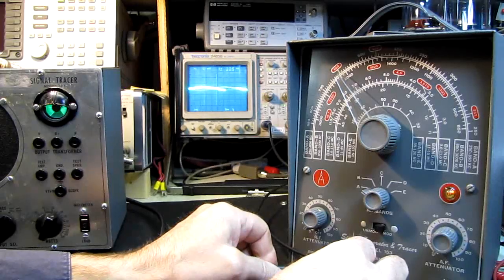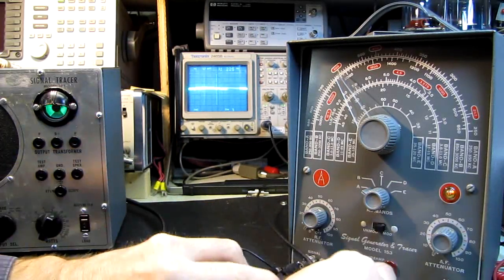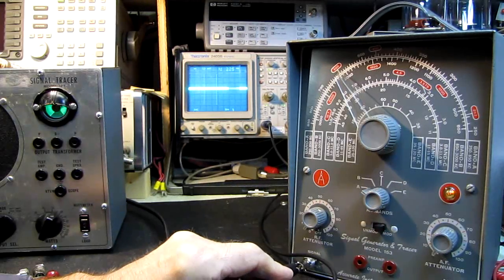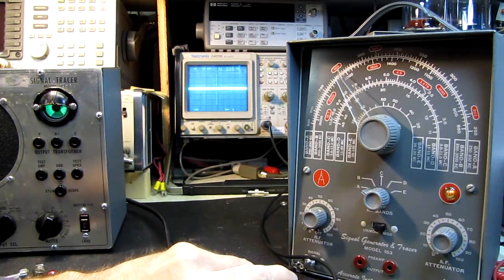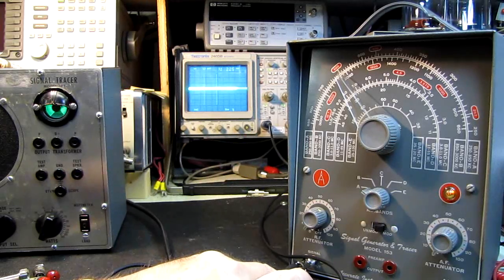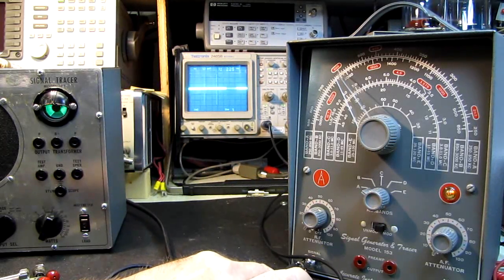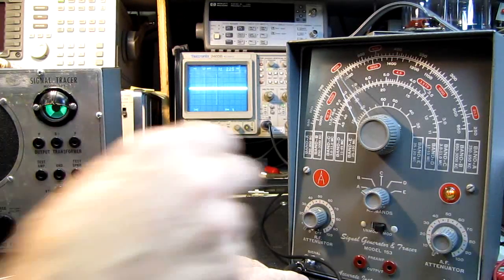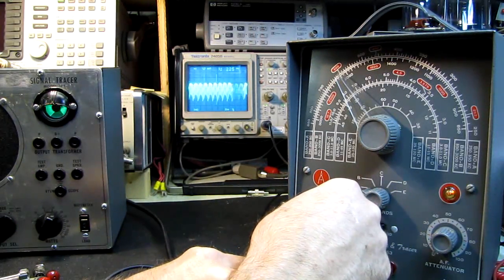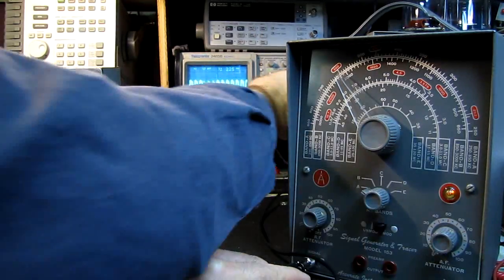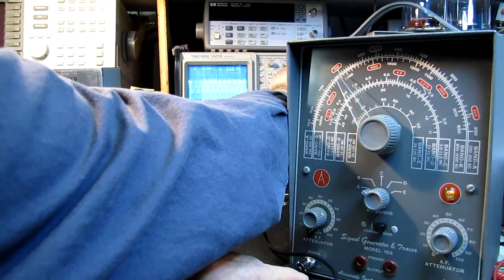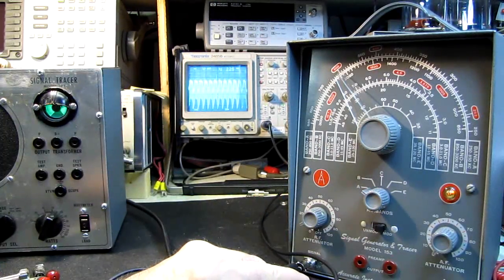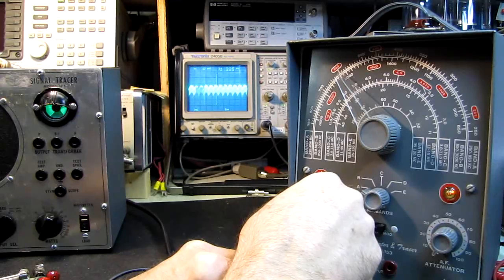But, I am going to hook it up over here to the RF generator. And as you can see, there is something there, but not enough to be a usable signal. So the signal tracer is going to do a very good job of letting me trace that modulated RF through whatever circuit I am working on. Now, if I turn this up, and come on, why aren't you syncing up here? Here we go. You can see the modulated RF.